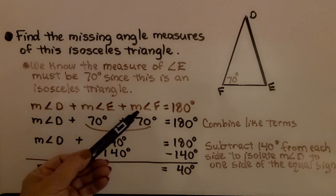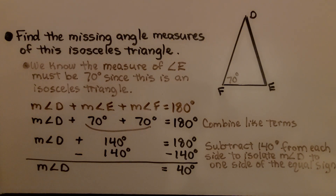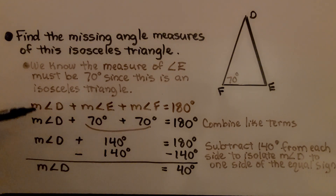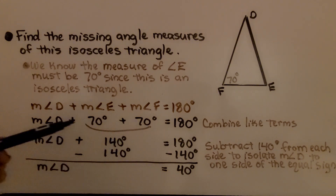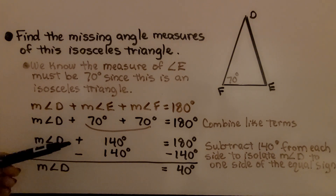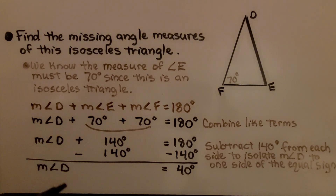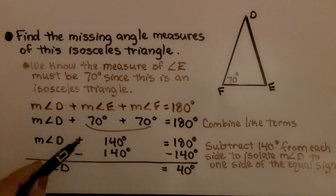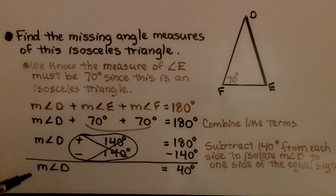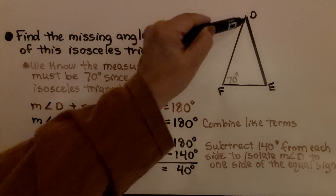The measure of angle D plus the measure of angle E plus the measure of angle F is equal to 180 degrees. We substitute 70 degrees for angle E and 70 degrees for angle F. Combining like terms: 70 plus 70 is 140 degrees. So the measure of angle D plus 140 degrees equals 180 degrees. We subtract 140 from each side — creating a zero pair — and 180 minus 140 is 40. The measure of angle D is equal to 40 degrees.